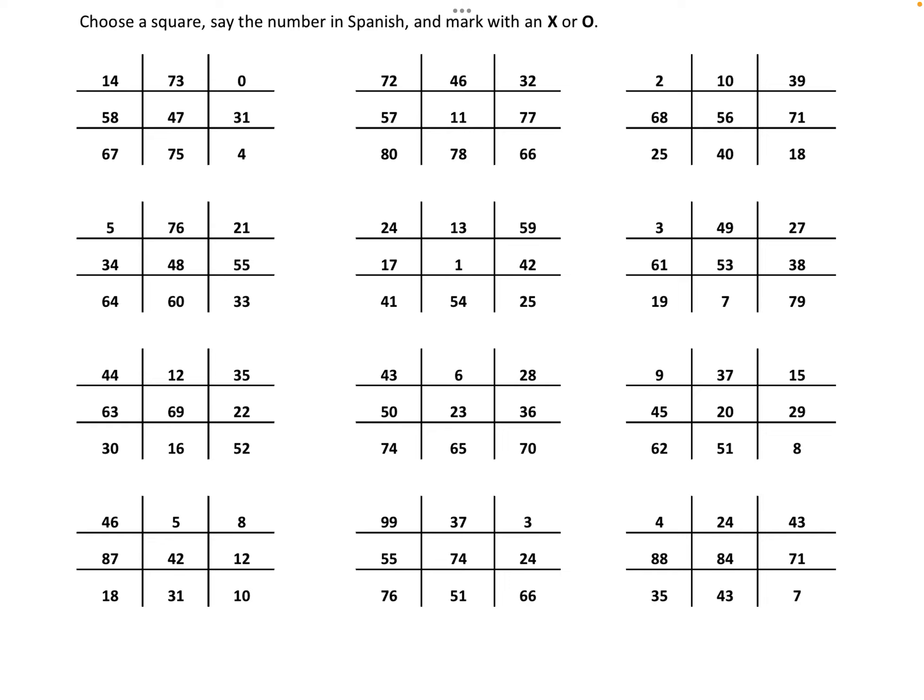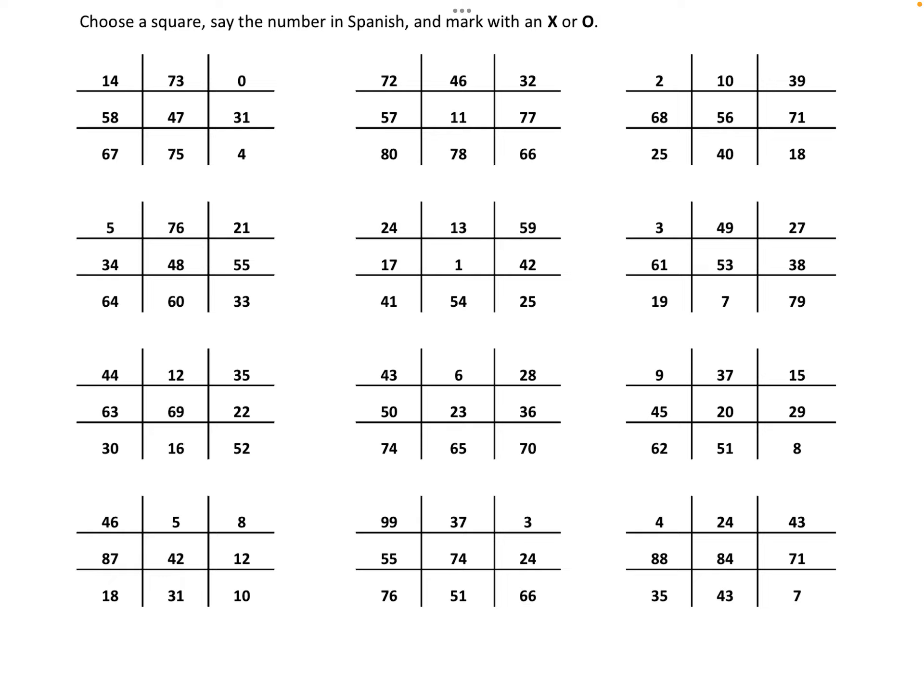This should take about 15 minutes or so. So once again, you're just playing tic-tac-toe, saying the numbers in Spanish, marking with an X and an O. See who wins the most games. Be courteous to each other. Help each other out if they say the wrong number, and then get a piece of candy for the winner.